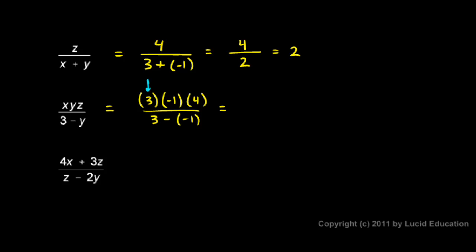Up top here, I have 3 times negative 1 times 4, which is just 12, but one of them is negative. So up top, I have negative 12. And on the bottom, I have 3 minus negative 1. That's the same as 3 plus 1. So I have negative 12 over 4. Negative 12 divided by 4 is negative 3.